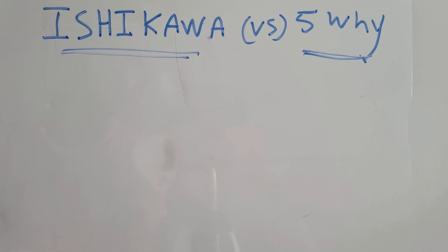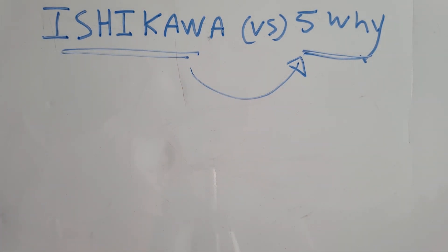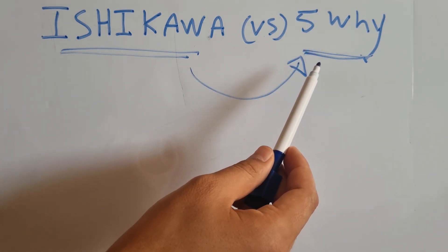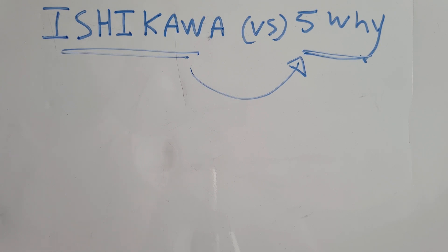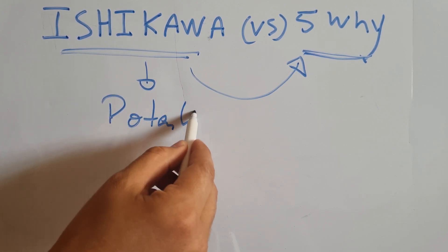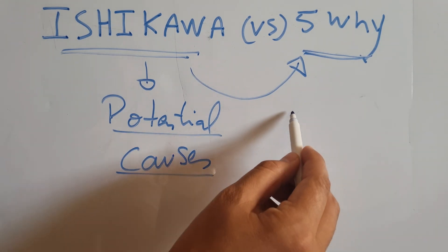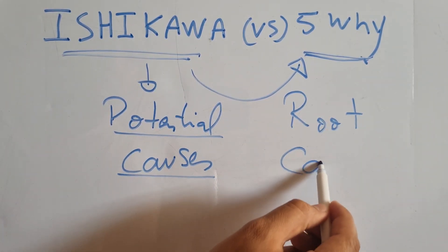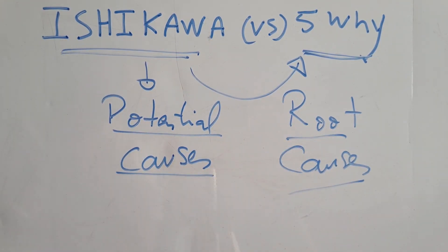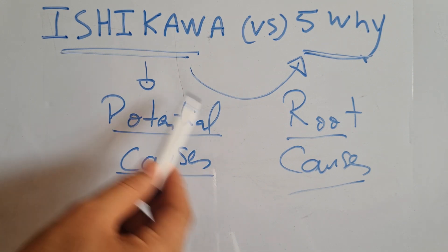At the end of this video you will understand everything about Ishikawa and everything about the 5 Whys, and when you can apply both of them. Firstly, Ishikawa and the 5 Whys are linked — we cannot use Ishikawa without the 5 Whys, and we cannot use the 5 Whys without Ishikawa. We use Ishikawa to find out the potential causes — not the root cause, but the potential root causes — and we use the 5 Whys to find out exactly the root cause.